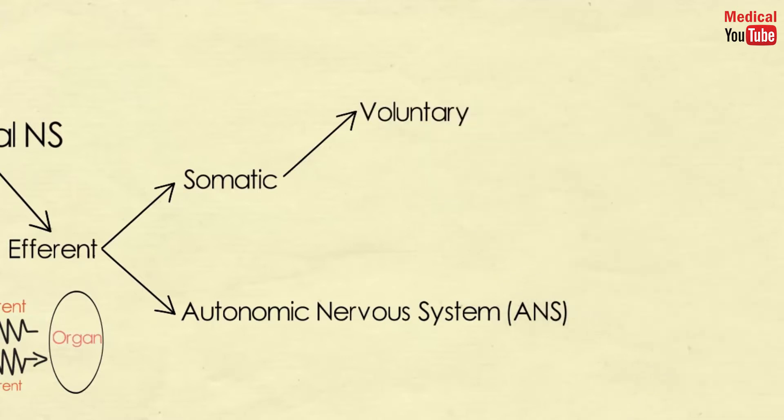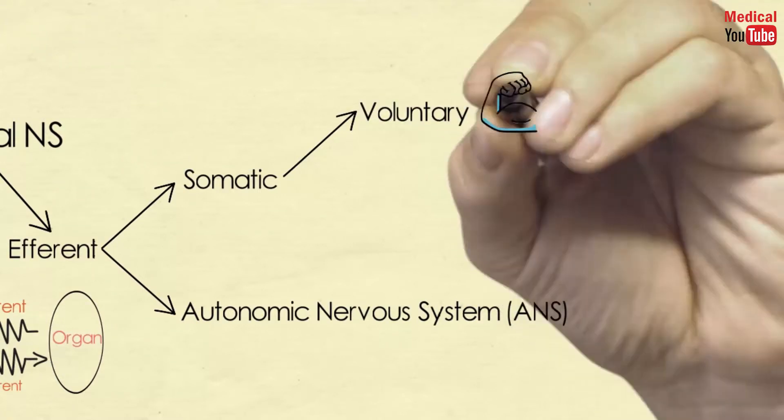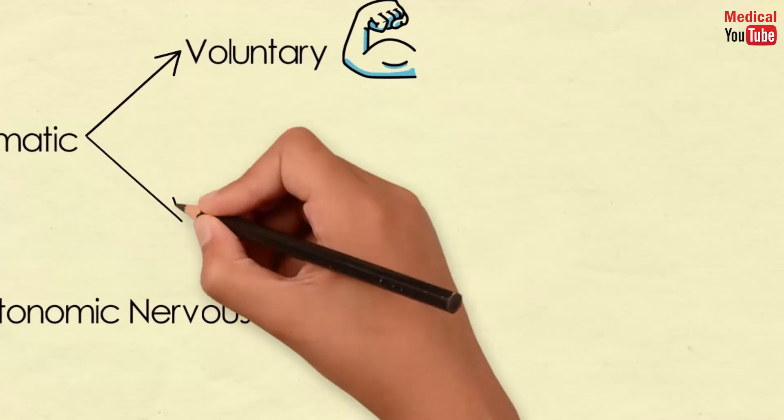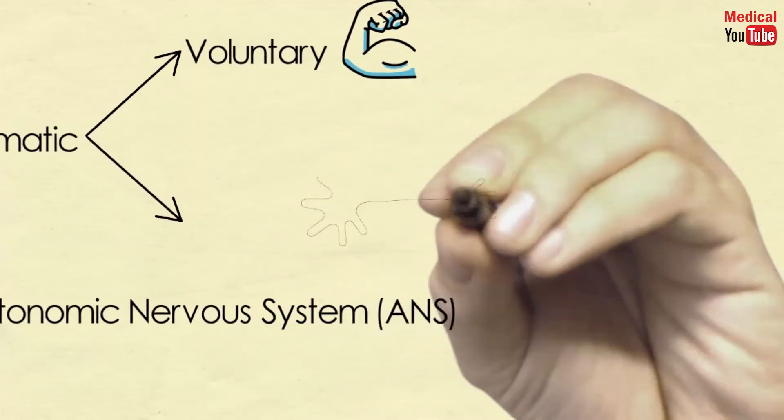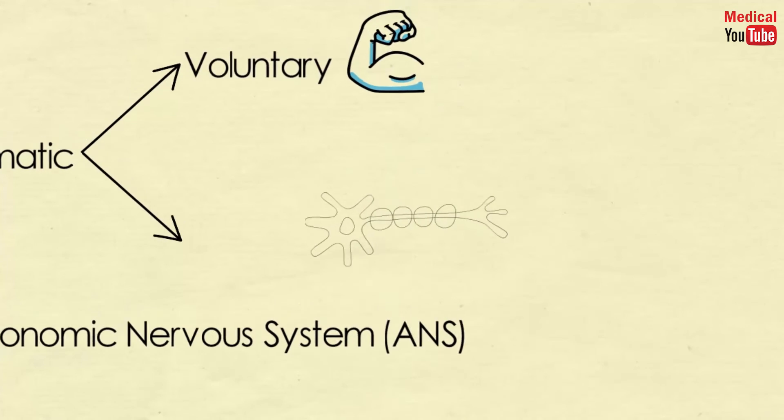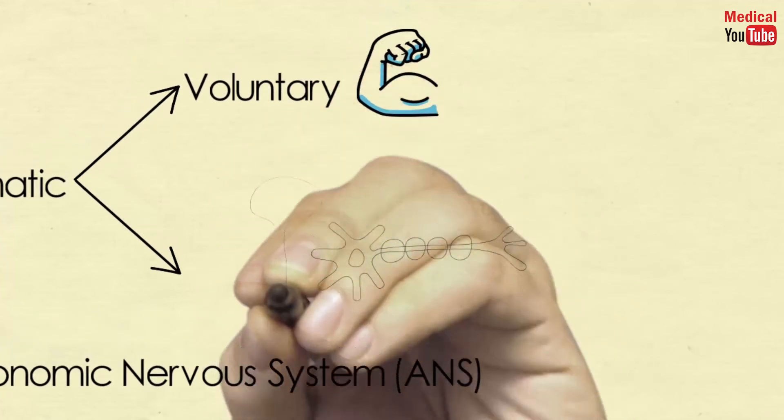The somatic efferent neurons are involved in the voluntary controlled functions such as contraction of the skeletal muscles. Somatic nerves are not interrupted by ganglia, and their neurons are myelinated.